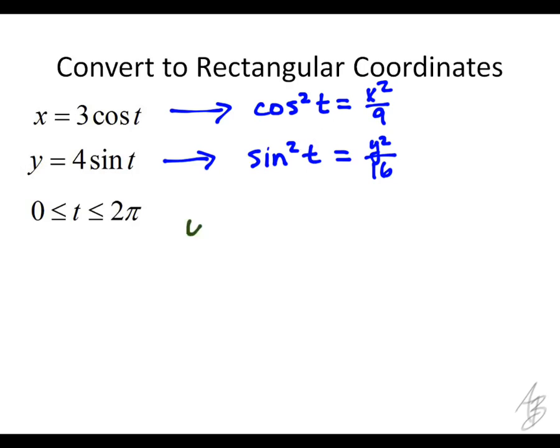So I can rewrite this as y squared over 16 plus x squared over 9 is equal to 1. And this is actually the standard form of an ellipse, right?